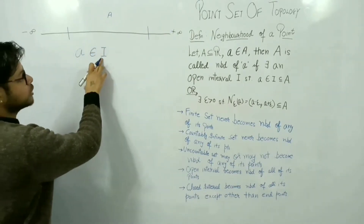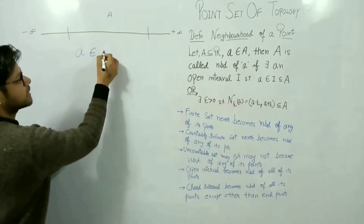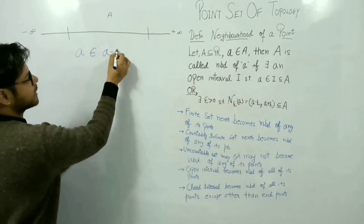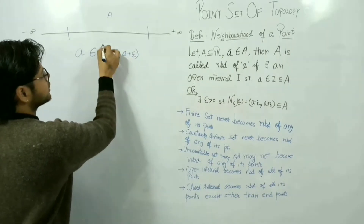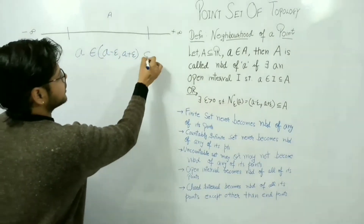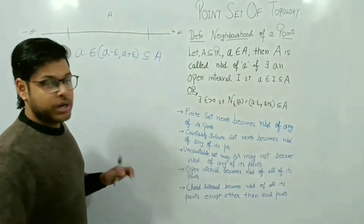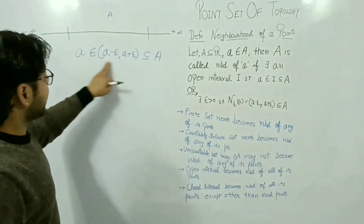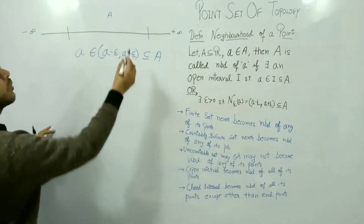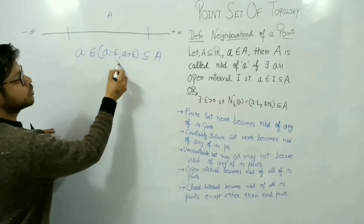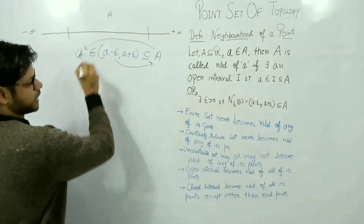I will find an open interval (a minus epsilon, a plus epsilon) such that 'a' belongs to this open interval and this open interval is a subset of A. If any such epsilon condition is satisfied, then A is a neighborhood of point 'a'.